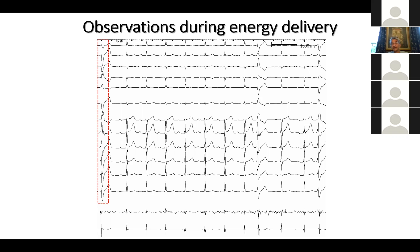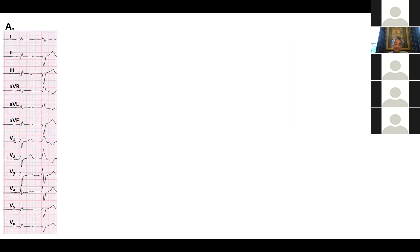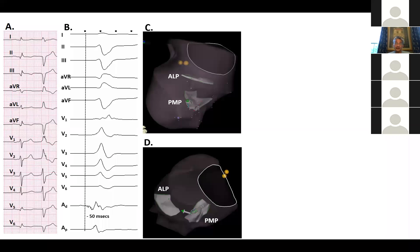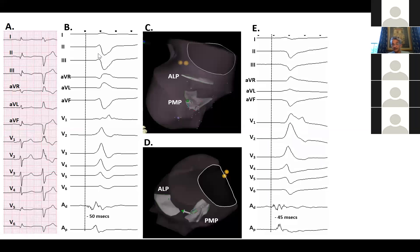Another scenario you can encounter: here is a ventricular arrhythmia, superiorly directed, with leads 2, 3, and aVF negative, aVL positive, and V1 biphasic, consistent with a posterior medial source. Using ICE-segmented anatomy to define the posterior medial pap, we identified a highly fractionated site of origin with the catheter tucked under the papillary muscle, and this was 15 milliseconds pre-QRS. After we ablate there, that PVC changes and transitions into a new morphology.